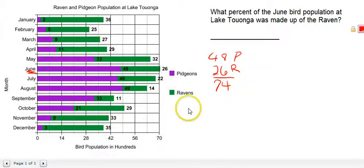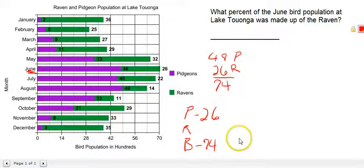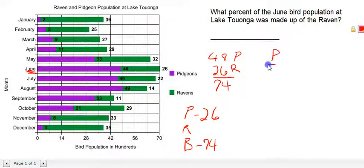Remember, the three parts of a percent are part, rate, and base. We've identified that we have the part — the 26 ravens — and we have the base — the total amount of birds at Lake Tuonga. The formula tells us that part divided by base gives us the rate, and rate is another word for percent.